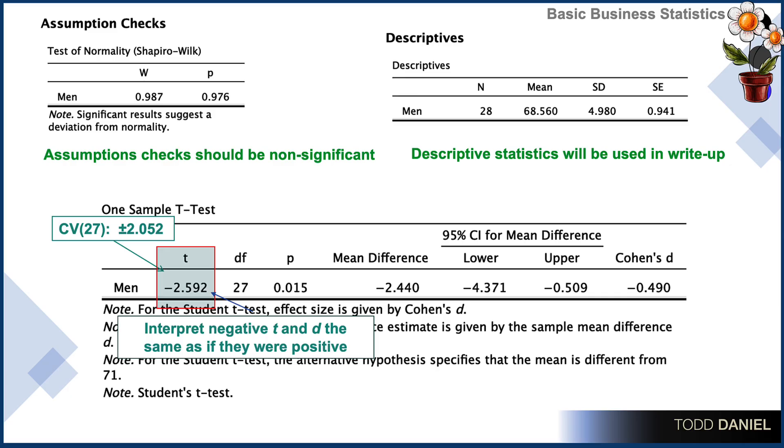A second way that we can determine statistical significance is looking whether our p-value is less than .05. In this case, it is .015, which is less than .05.